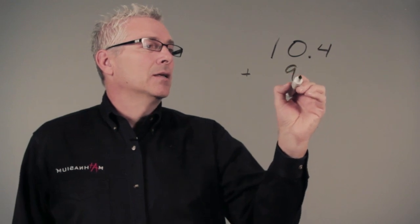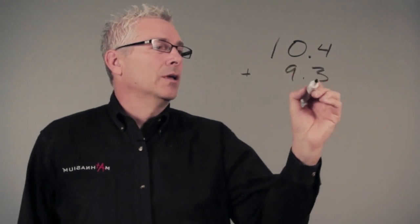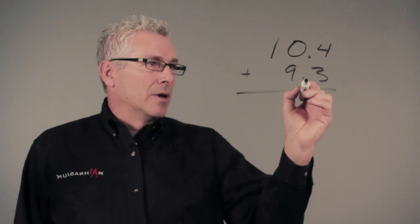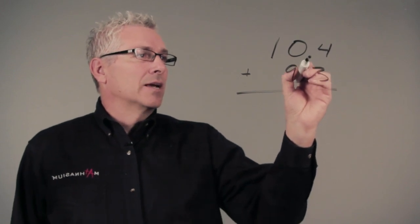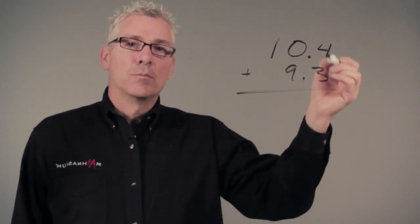If I'm doing 10.4 plus 9.3, you'll notice that my decimals line up exactly on top of each other, leaving our place values in place because we can only add or subtract numbers that have the same place value. I have 4 tenths and I have 3 tenths. I have 0 ones and I have 9 ones and I have 1 ten.